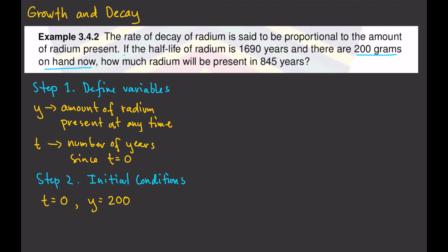Half-life is the amount of time that the amount of radium becomes one-half of the original amount. So at 1,690 years the amount of radium becomes half of the original, meaning t equals 1,690, y equals one-half of 200, which is 100. So that is our second initial condition.